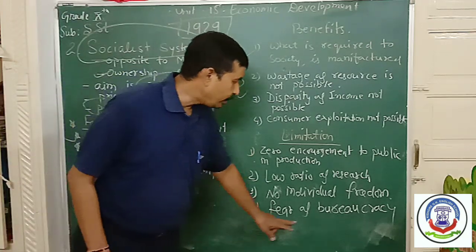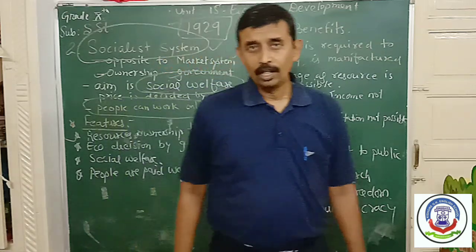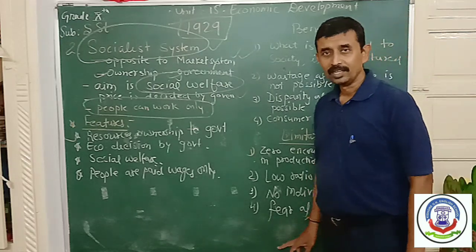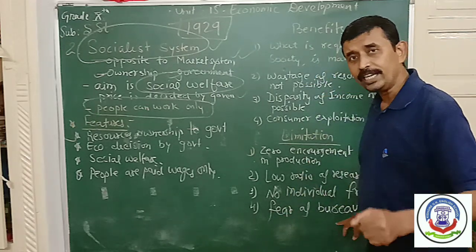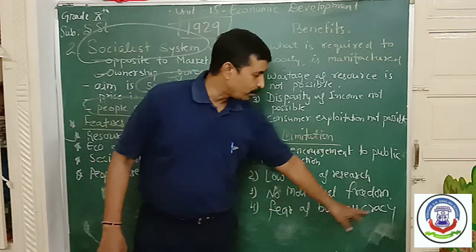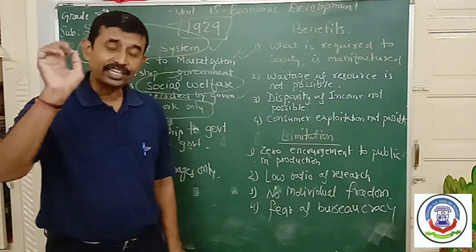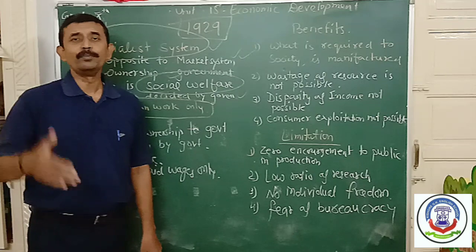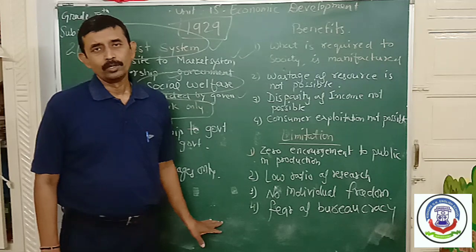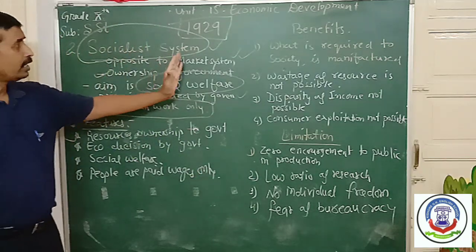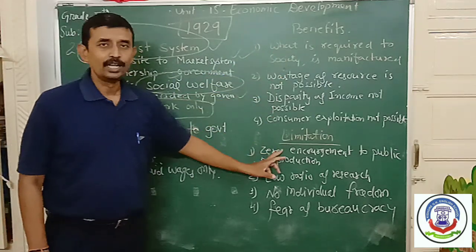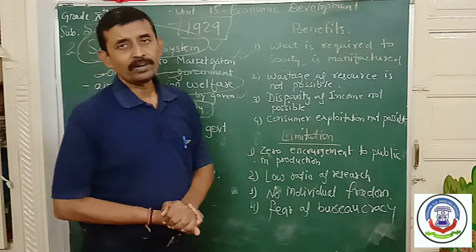The fourth limitation is fear of bureaucracy. Whenever the government holds the entire power — owning all resources and all factors of production — chances of bureaucracy increase. They become dictators, and ultimately people have to suffer a lot in this type of economy. So this is the socialistic system of economy, covering three important points: features, benefits, and limitations. I hope you all have understood this.